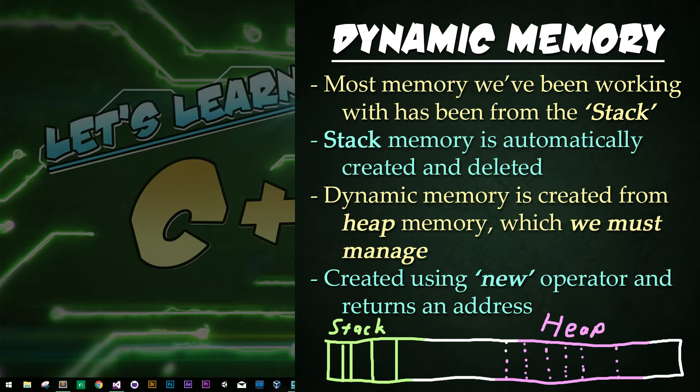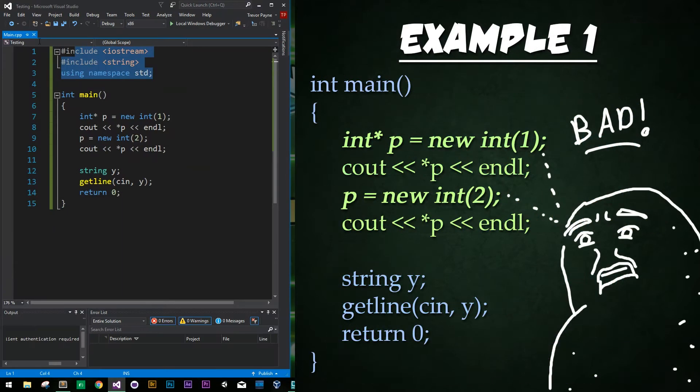This dynamic memory is allocated or created using the keyword new and returns an address where the value is stored. So let's look at an example. Here we have our usual setup code. Then in our main block we have the creation of an int pointer called p and it is being set to a new instance of an int that has a value of one being passed in to the arguments.